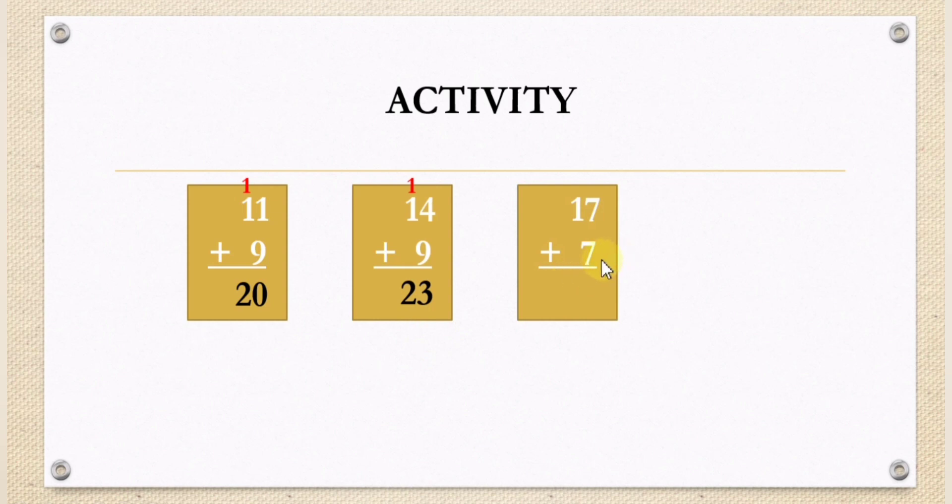Another: 7 plus 17. Add 7 plus 7, we will have 14. Bring down 4, carry over 1. 1 plus 1, we have 2. The answer of 7 plus 17 equals 24.